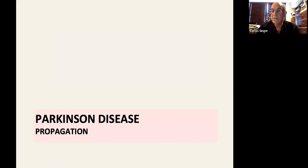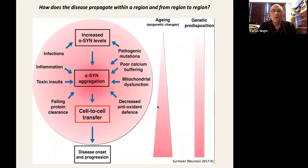So how does the disease propagate? Well, the idea is that you have, for all of the factors we described, an increase in alpha-synuclein aggregation.